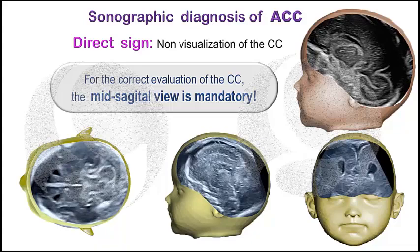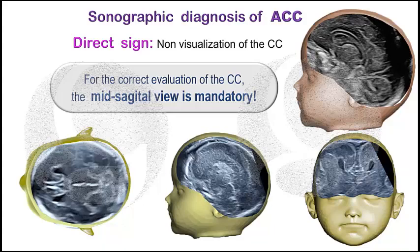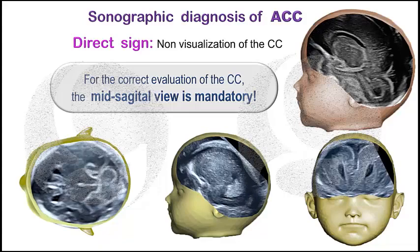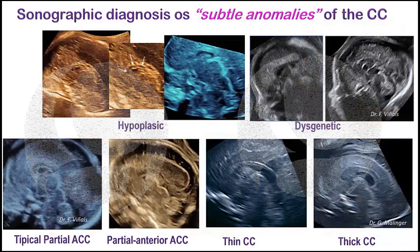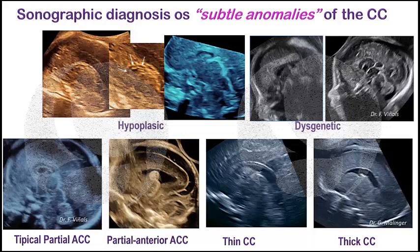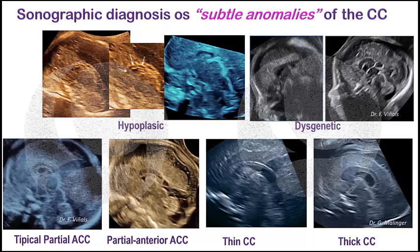Therefore, for the correct evaluation of corpus callosum anomalies, we need to perform a multiplanar assessment in which the mid-sagittal view is absolutely mandatory, in order to get the direct sign — the non-visualization of the whole corpus callosum or a segment of it. Even though most current guidelines do not include the mid-sagittal plane in the routine exam, if we keep trying to visualize the corpus callosum in the mid-sagittal plane in all our routine examinations, we will become familiar with the normal appearance along gestation and be able to immediately recognize abnormalities of shape and size.